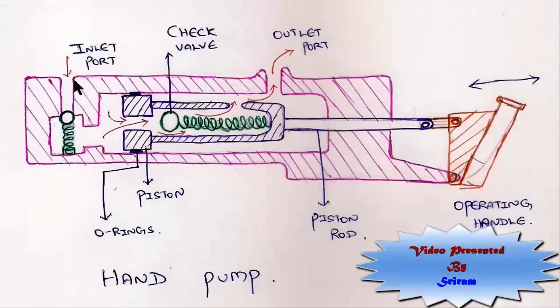In the inlet port, we have a ball like structure which seals against the port with the help of spring pressure. As the piston is pulled up in the cylinder due to the reciprocating motion,